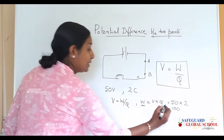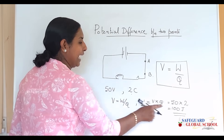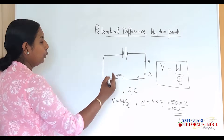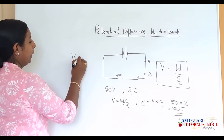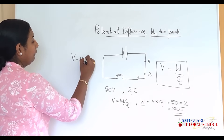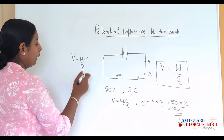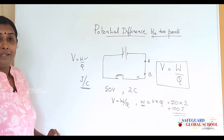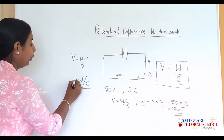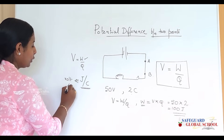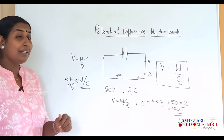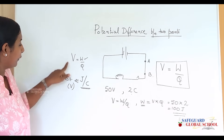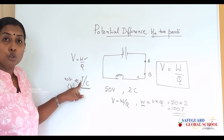The unit of work done is joule, so the work done is calculated as 100 joules. Coming back to the unit of potential difference: since V equals W divided by Q, when we put the unit for W it is joule and the unit of Q is coulomb, so the unit of potential difference is joule per coulomb. This joule per coulomb corresponds to a unit called volt, denoted by V, named to honor the great scientist Alessandro Volta.